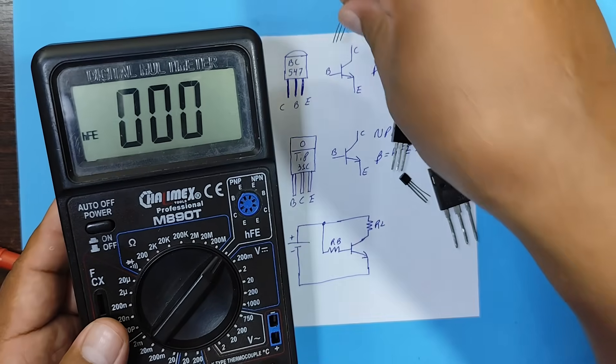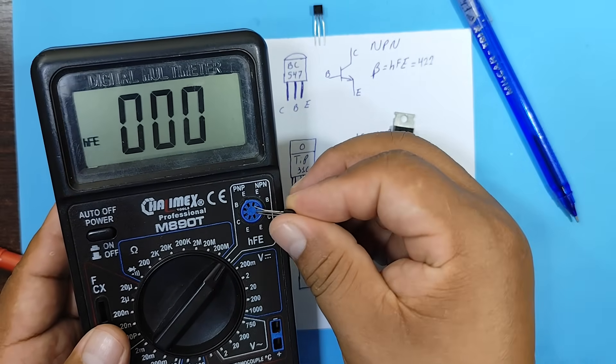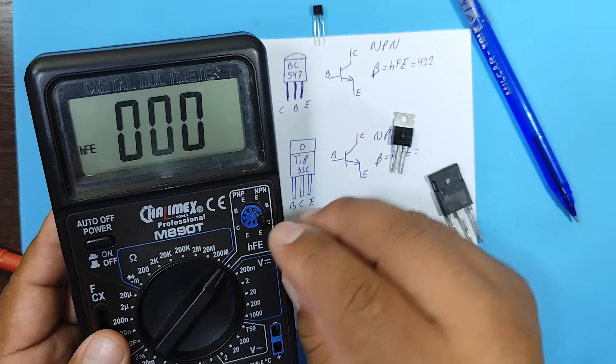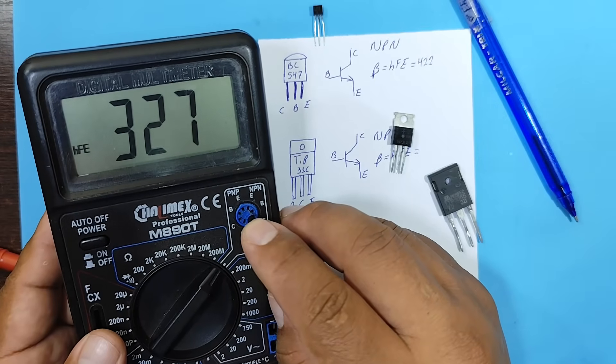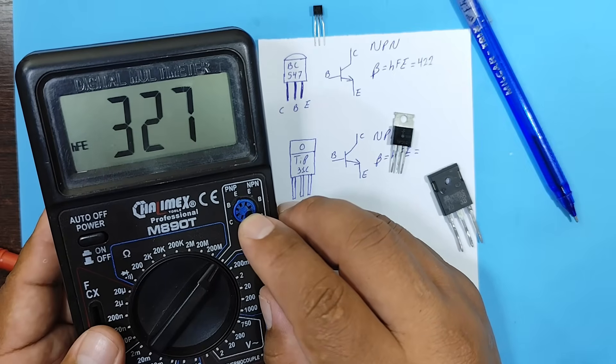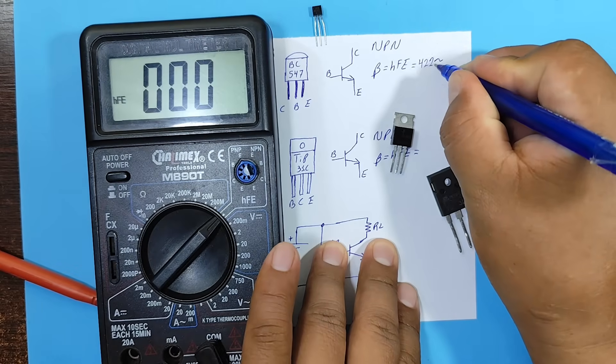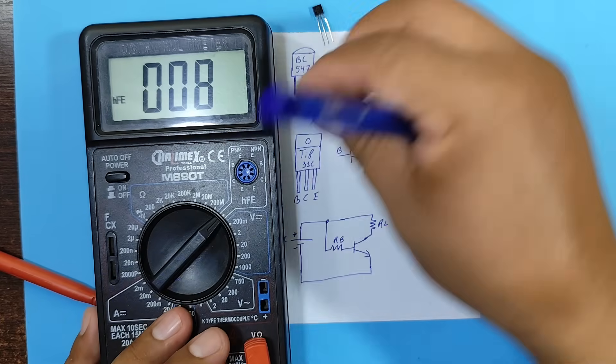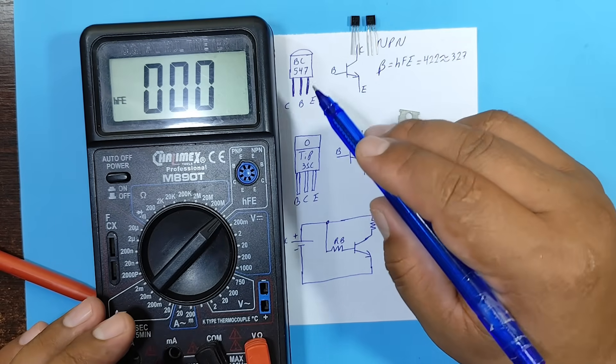However, let's test it with another transistor of the same model. We can see that it's 327. That means there will be differences between one transistor and another, regardless of whether they're the same model.